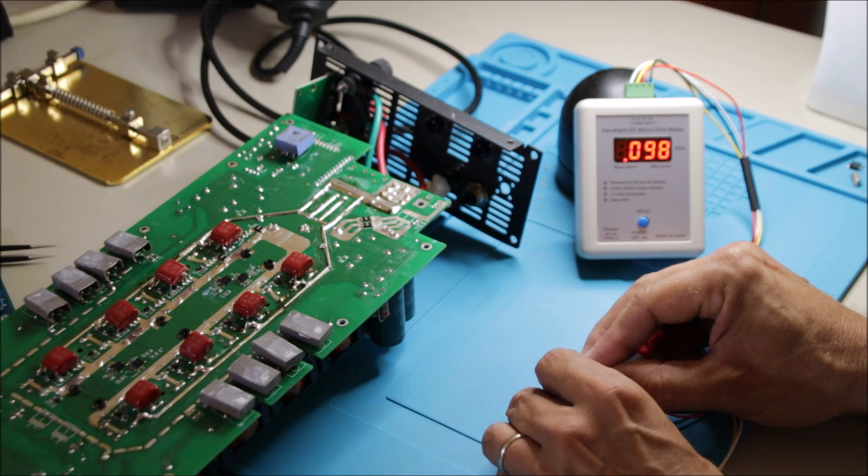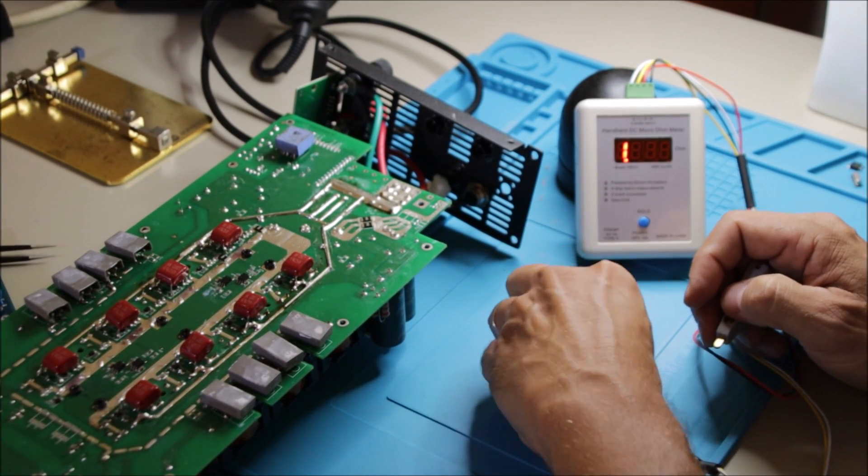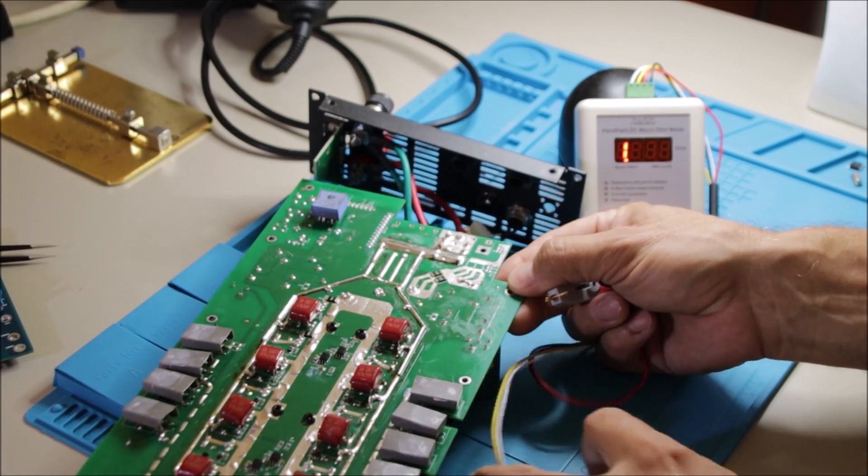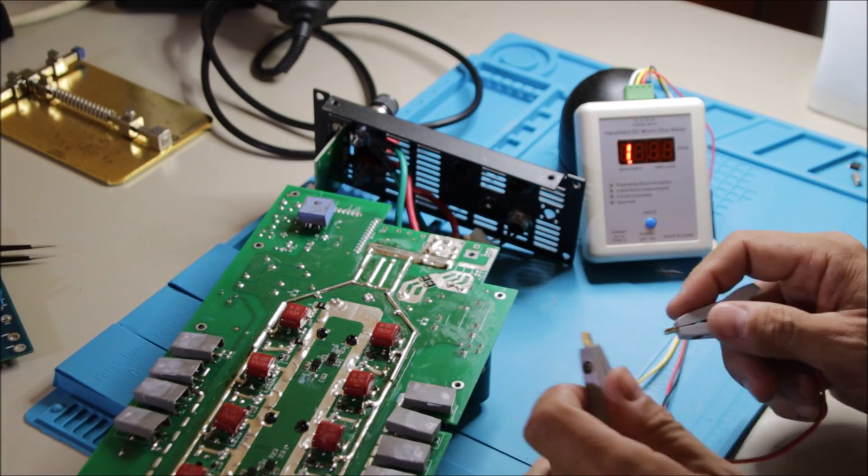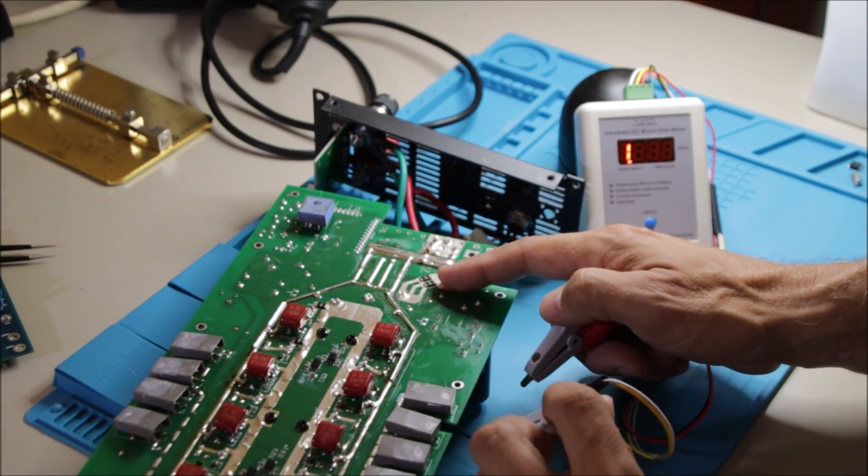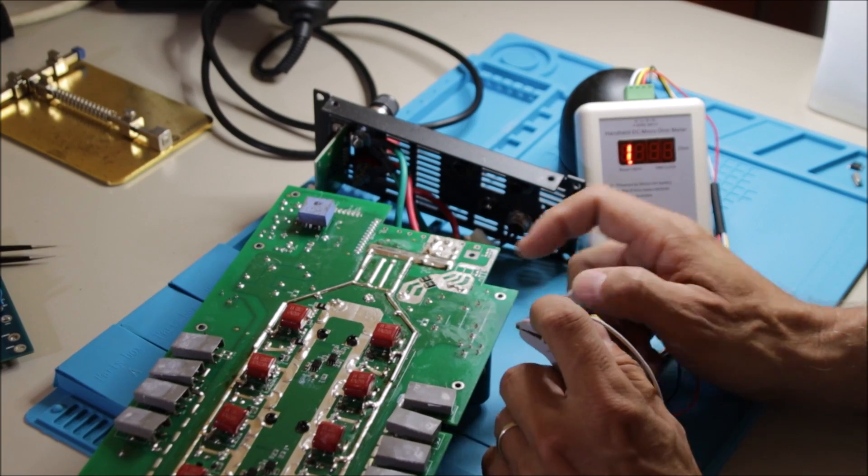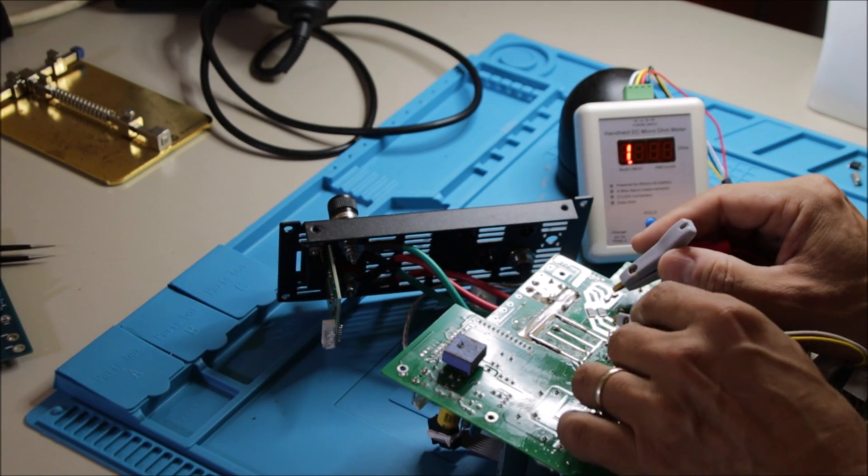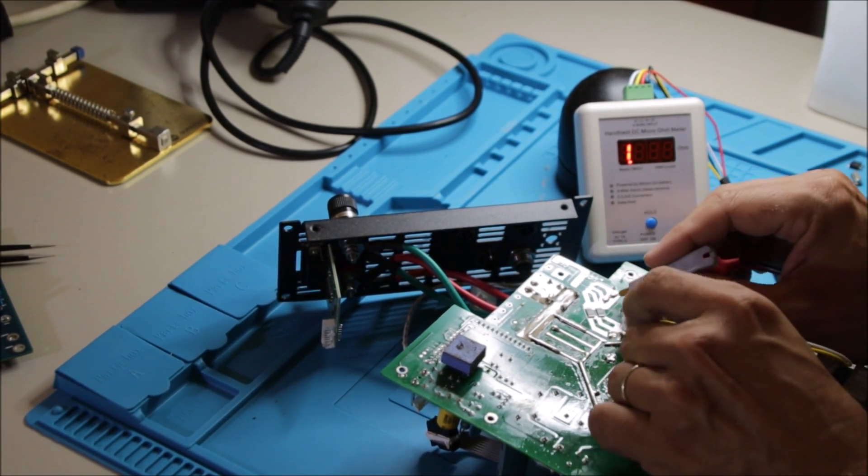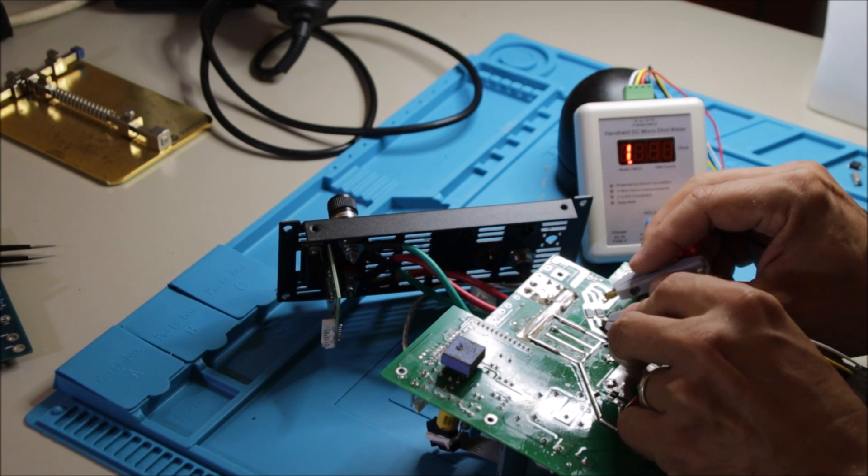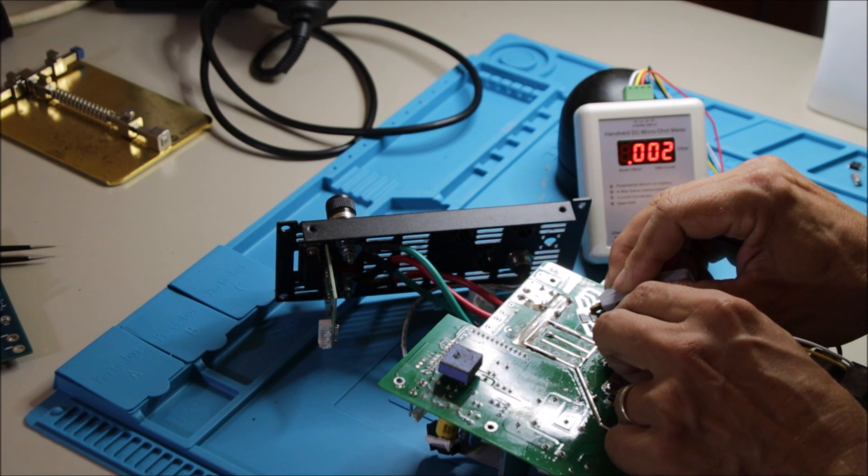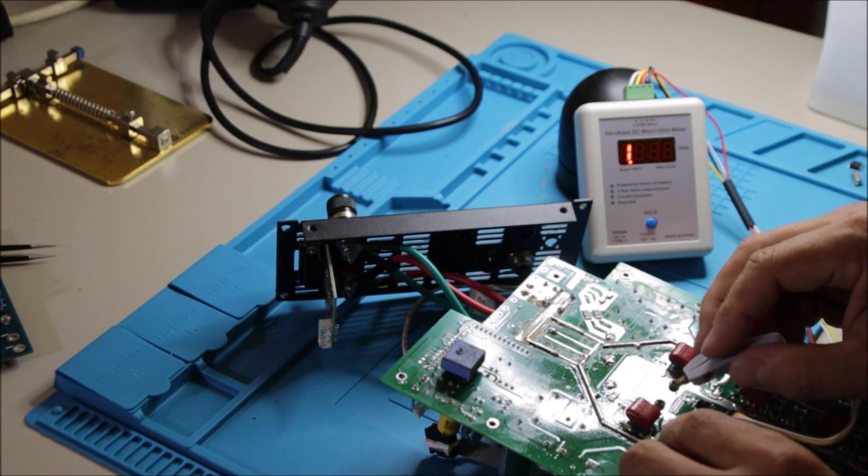Let's check here on our inverter board. I have here two 4 milliohm shunt resistors in parallel. Two resistors in parallel means of course we should expect a reading of 2 milliohms only. Let's check it, and you see 2 milliohms. So perfect reading.